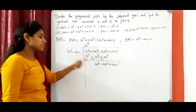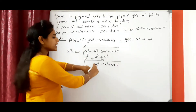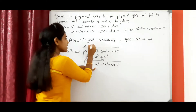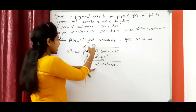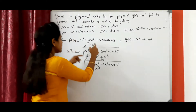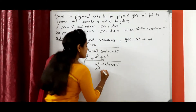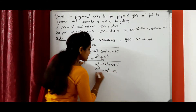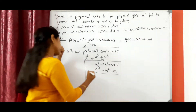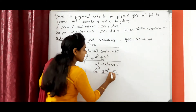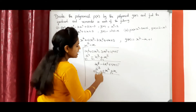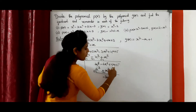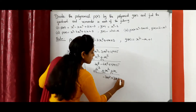Next, same procedure — we need to eliminate the first term. We need X cube. Here X square is there, so which term do we need to multiply? We need to multiply X. X into X square gives X cube. X into minus X gives minus X square. X into 1 gives plus X. Next, we need to change the sign. This one we can cancel. Here, minus 4 X square plus X square gives minus 3 X square. Then 4 X minus X gives plus 3 X, plus 5.